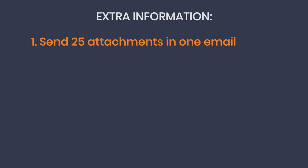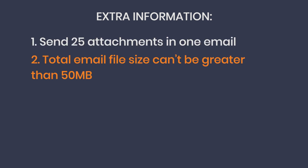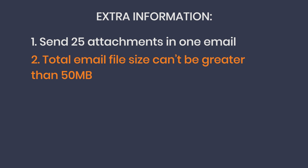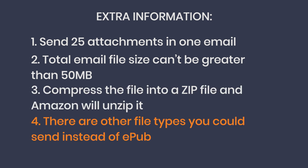Some important extra information: you can send 25 attachments in one email at a time. The total email file size can't be greater than 50 megabytes. If you need to, you can compress the file into a zip file and Amazon will unzip it. And finally, there are other file types you can send instead of EPUB; however, these other types generally don't look good or have problems. So it is best to just use EPUB for this.